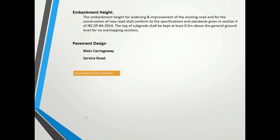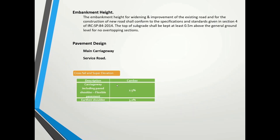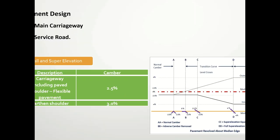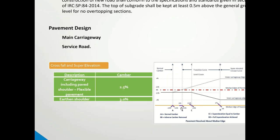Cross fall and super elevation are next. Cross fall is the transverse slope of the road surface, while gradient is the longitudinal slope. Cross fall standards are: for carriageway including paved shoulder, flexible pavement should be 2.5% and rigid pavement 2%. For earthen shoulder it is always 0.5% greater than the camber provided.